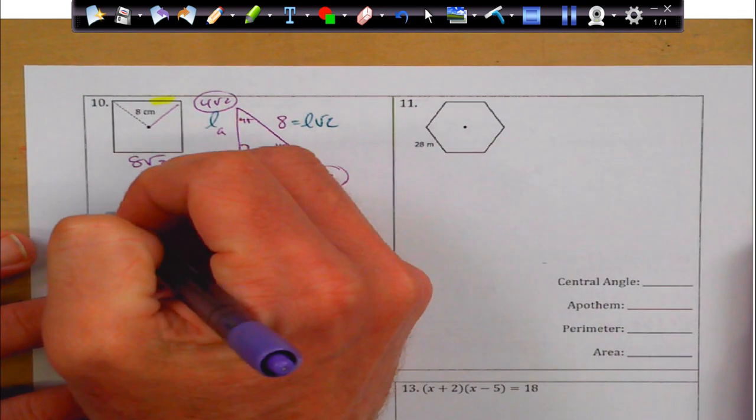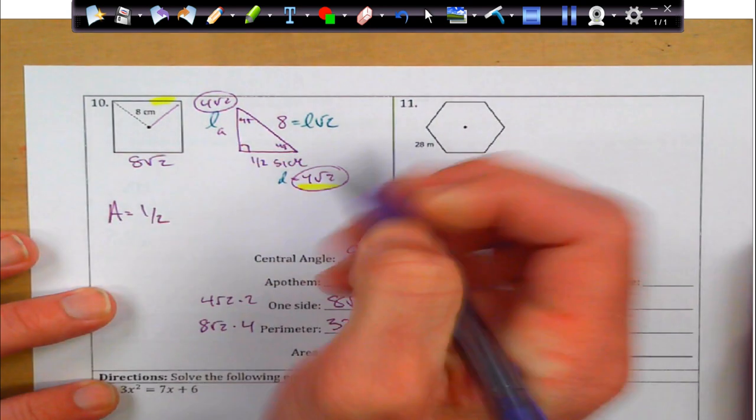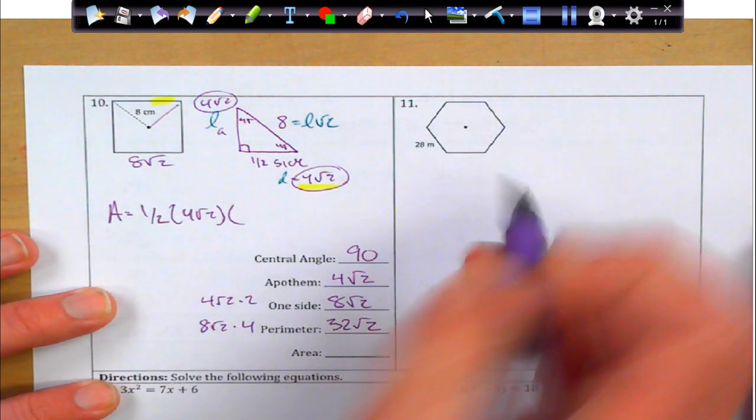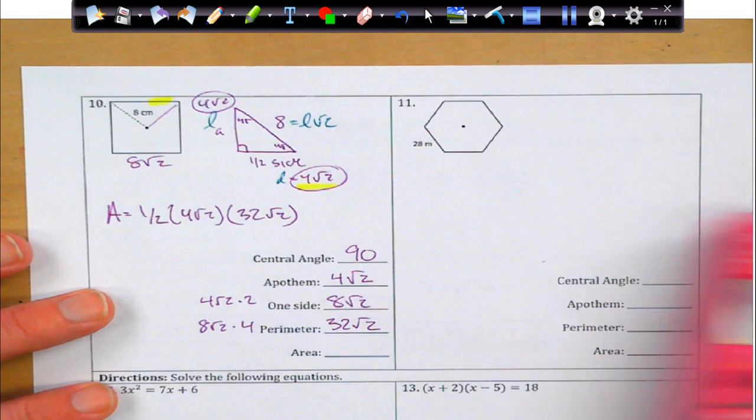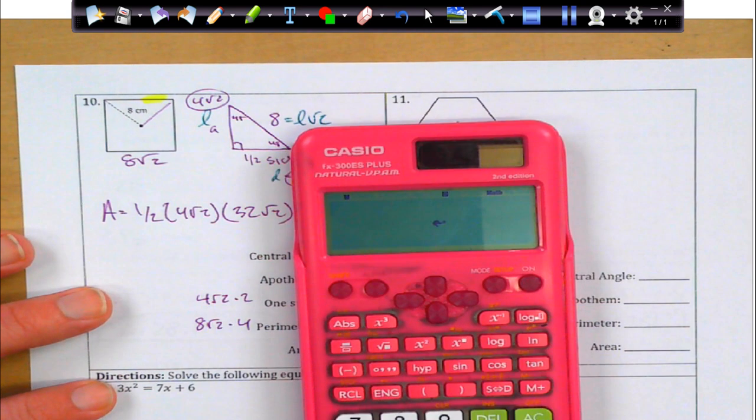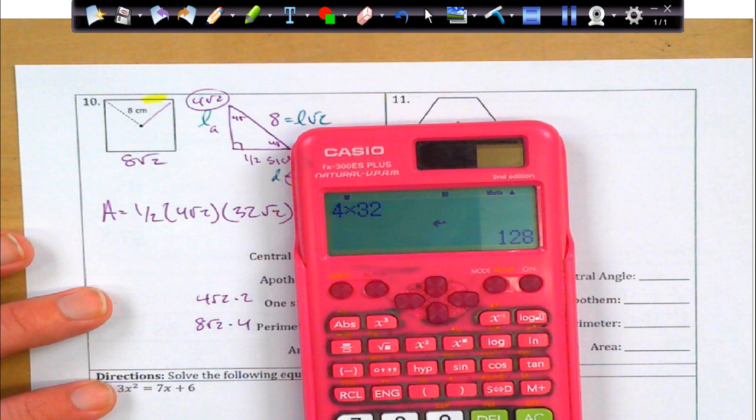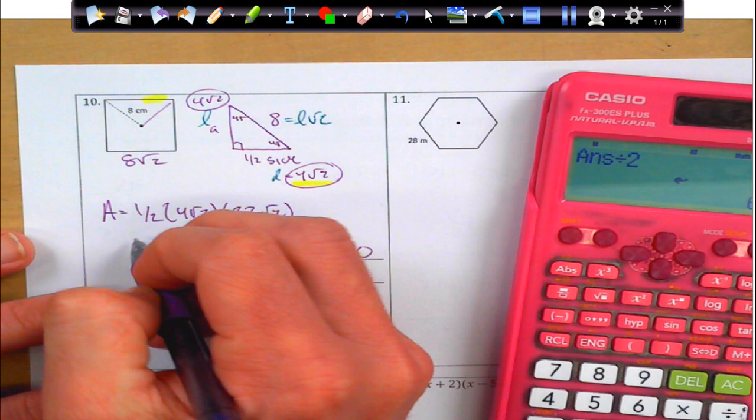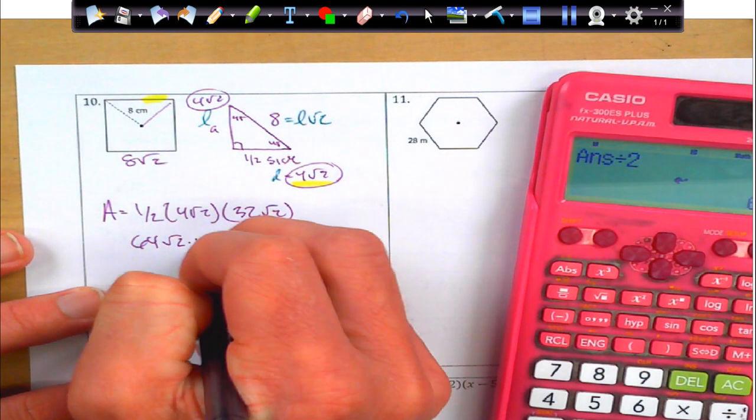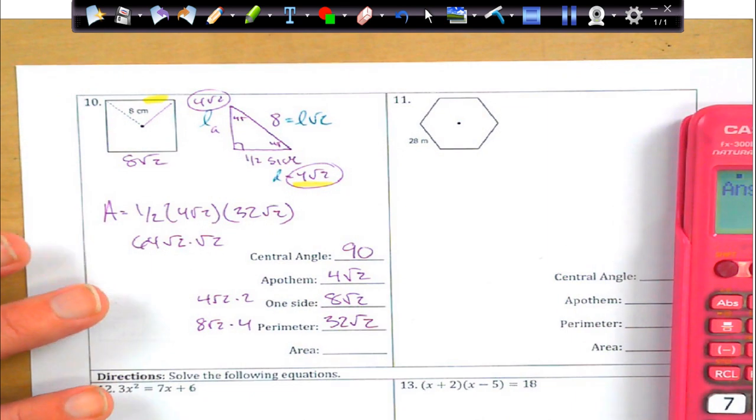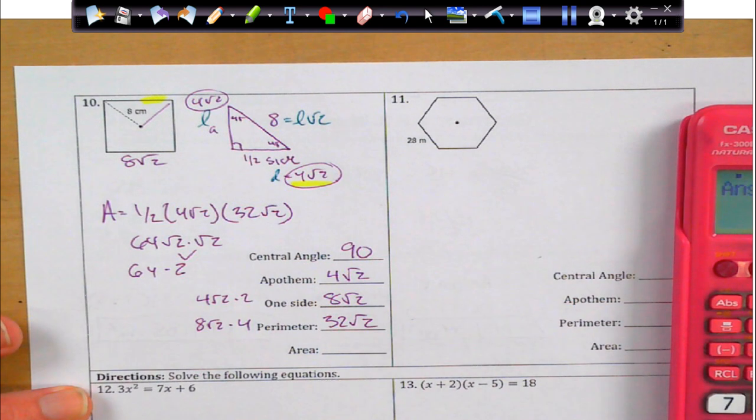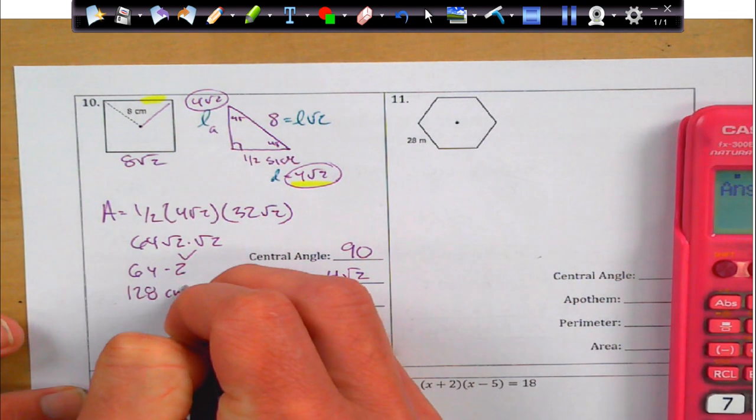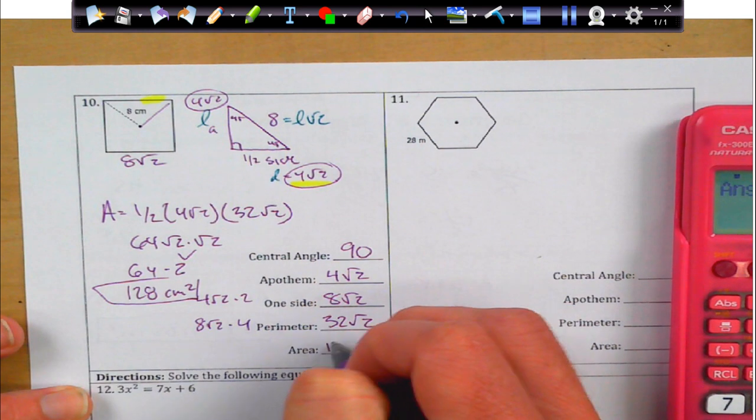And we just kind of throw it all into my formula. 1 half apothem, which is 4 rad 2, times my perimeter, which is 32 rad 2. And this is, again, I'm going to leave the rads to the end. I'm going to do 4 times 32, which is 128. Divide that by 2. And I get 64 times rad 2 times rad 2. And what is rad 2 times rad 2? Well, that just ends up being 2. So, I get 64 times 2, which gives me 128. And that's going to be in square centimeters for my area.